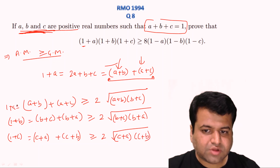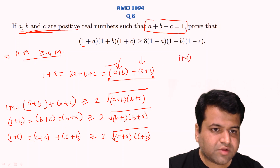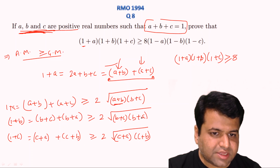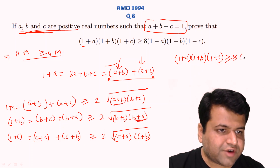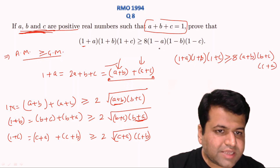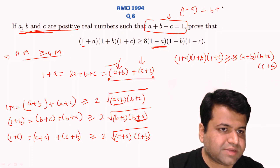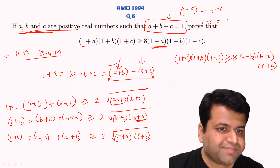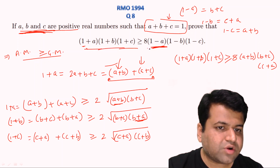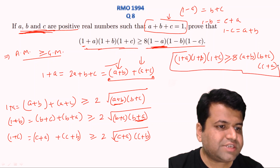Multiplying all three inequalities, the left-hand side gives (1 + a)(1 + b)(1 + c), which is greater than or equal to 8 times — since 2 × 2 × 2 = 8 — and every factor appears twice under the square roots, so they cancel, leaving (a + b)(b + c)(c + a). Noting that 1 − a = b + c, 1 − b = c + a, and 1 − c = a + b, we conclude that (1 + a)(1 + b)(1 + c) ≥ 8(1 − a)(1 − b)(1 − c). That's it for this question.